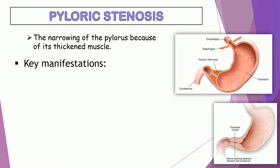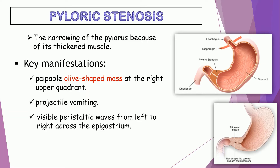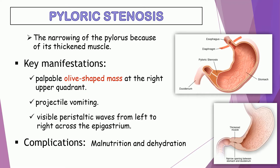Since there is a narrowing that can result in obstruction, the key manifestations are a palpable olive-shaped mass at the right upper quadrant, projectile vomiting, and visible peristaltic waves from left to right across the epigastrium during or immediately after feeding. The complications are malnutrition and dehydration due to vomiting, which can lead to metabolic alkalosis if not prevented. Note: the vomitus is white and does not contain bile because the narrowed or obstructed part is in the upper GI tract.